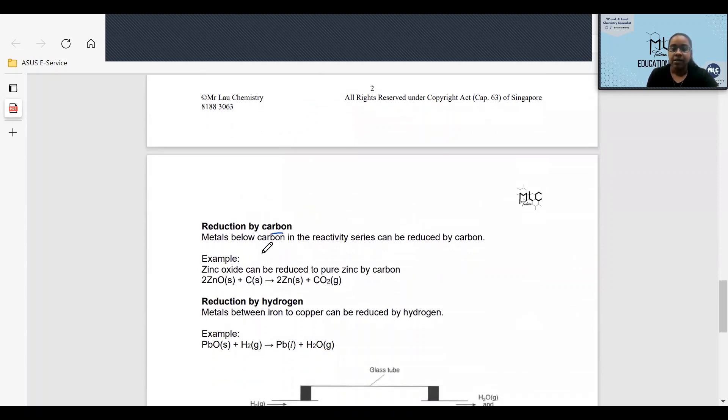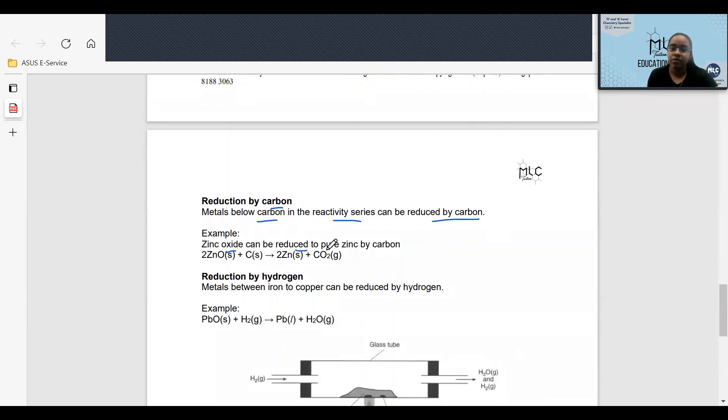For reduction by carbon, the metals below carbon in the reactivity series can be reduced by carbon. For example, we have zinc oxide that can be reduced to pure zinc by carbon, as shown in this equation over here.